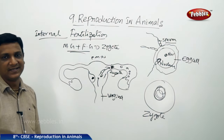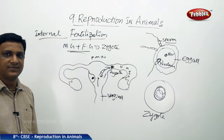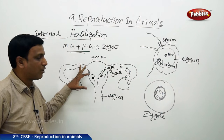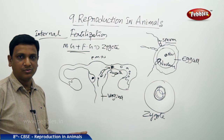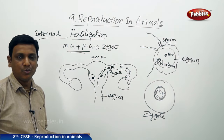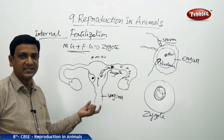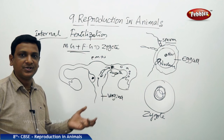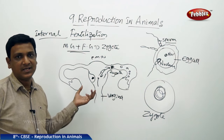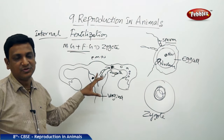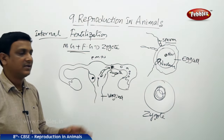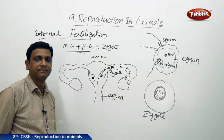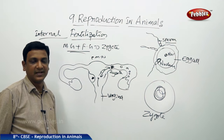This is called fertilization. In cows, hens, dogs, and humans, the fertilization takes place inside the female body. The male reproductive cells are introduced into the female body, where the male cells fuse with female cells, forming a zygote. This process is called internal fertilization.